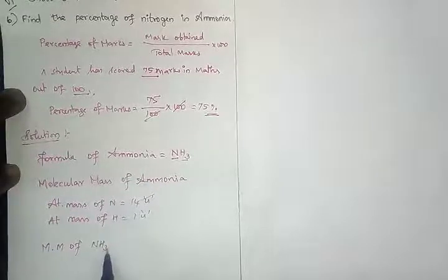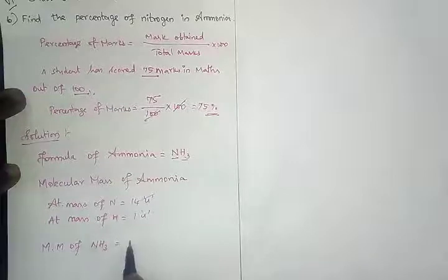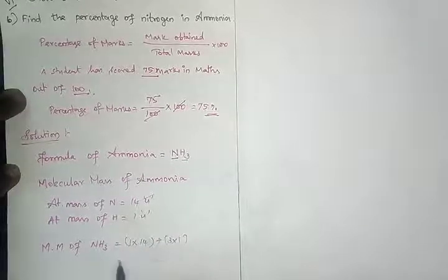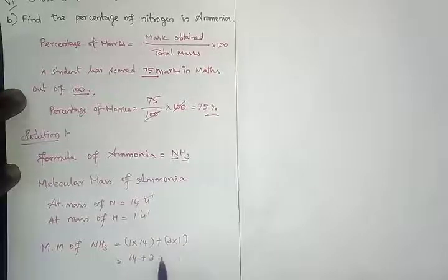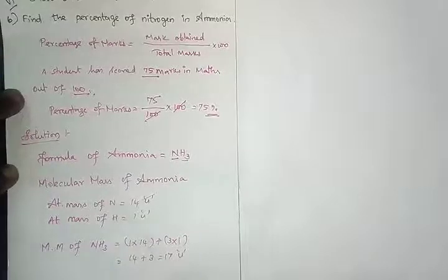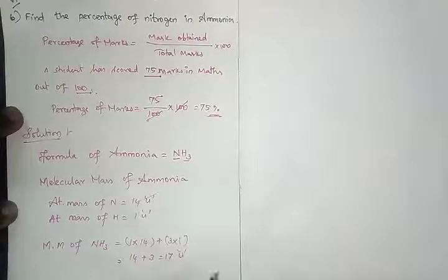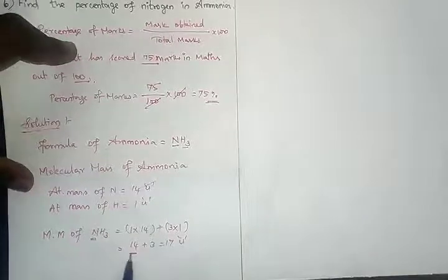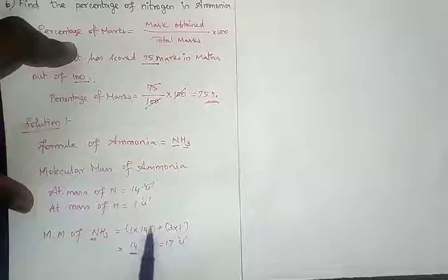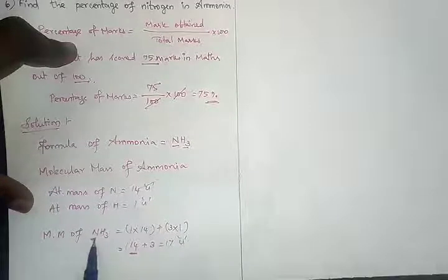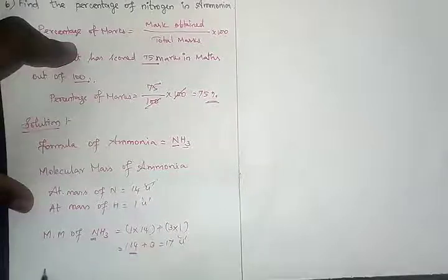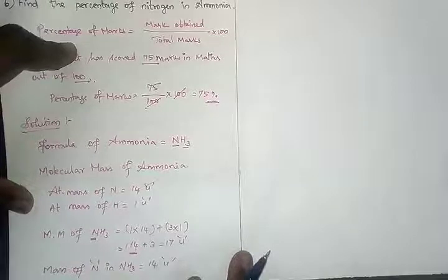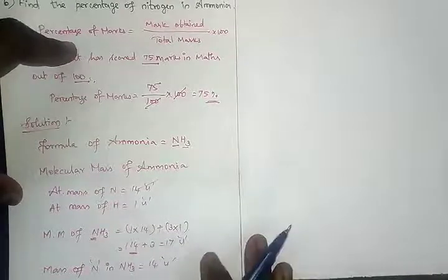The molecular mass of NH3 is equal to: 1 nitrogen atom × 14 plus 3 hydrogen atoms × 1, which gives 14 + 3 = 17u. So the total molecular mass is 17u. From this calculation, the mass of nitrogen in NH3 is 14u.